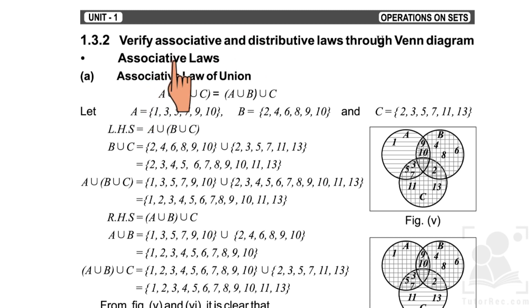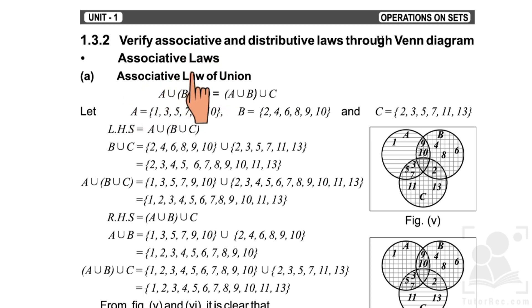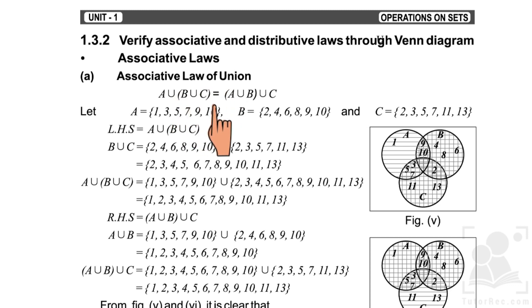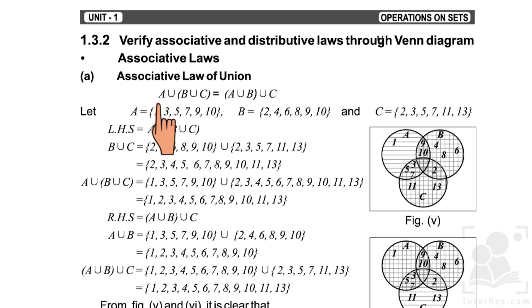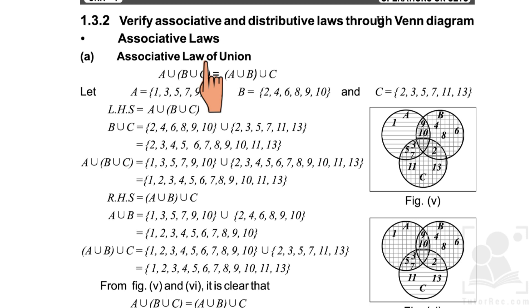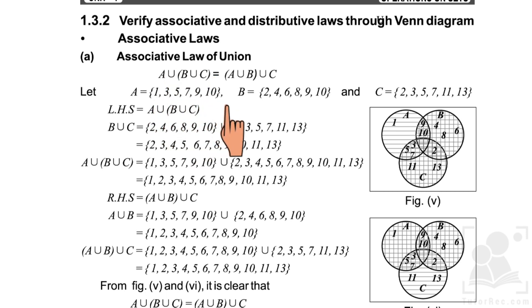Next we verify the associative and distributive laws through the Venn diagram. For the associative law of union, we have a left-hand side and a right-hand side, and both sides are equal to each other. First we will represent and prove A union (B union C) — the left-hand side. Set A has elements 1, 3, 5, 7, 9, 10.